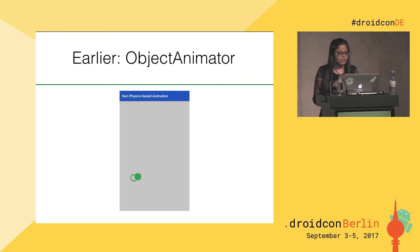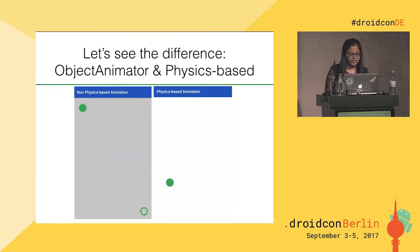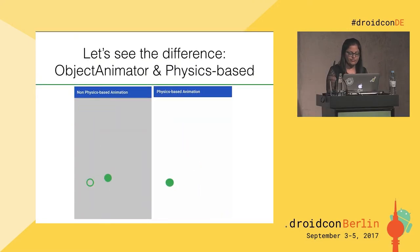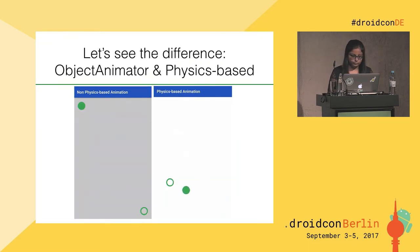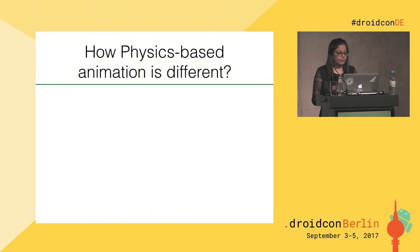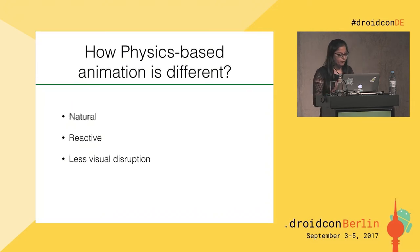In physics-based animation, the APIs are driven by force. A change in the target value results in a change in the force. This change in force applies on the existing velocity, which makes a continuous transition to the new target. This process results in a natural-looking animation. Physics-based animation is different because it is natural, it is reactive, and it has less visual disruption, which means the animation will look more natural, mimic real-time movements, and give a smoother experience for the user.